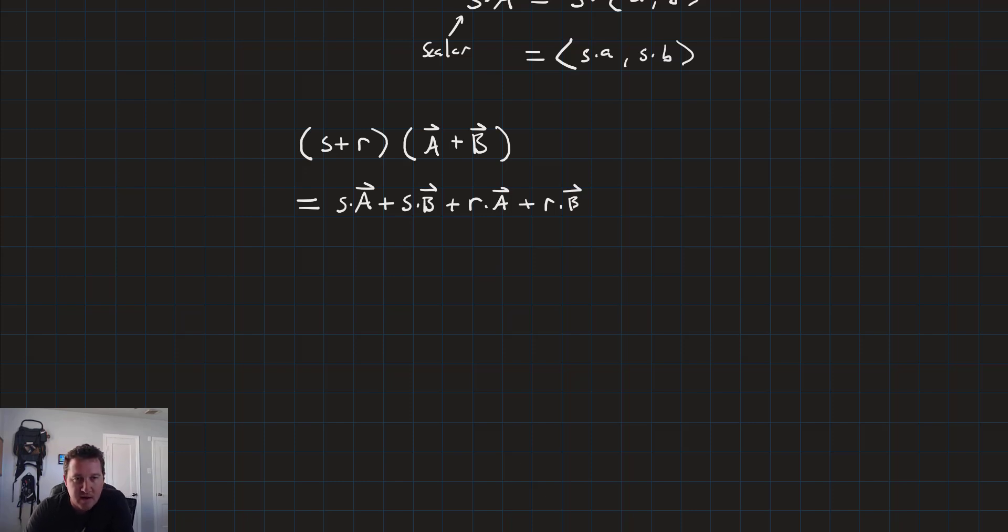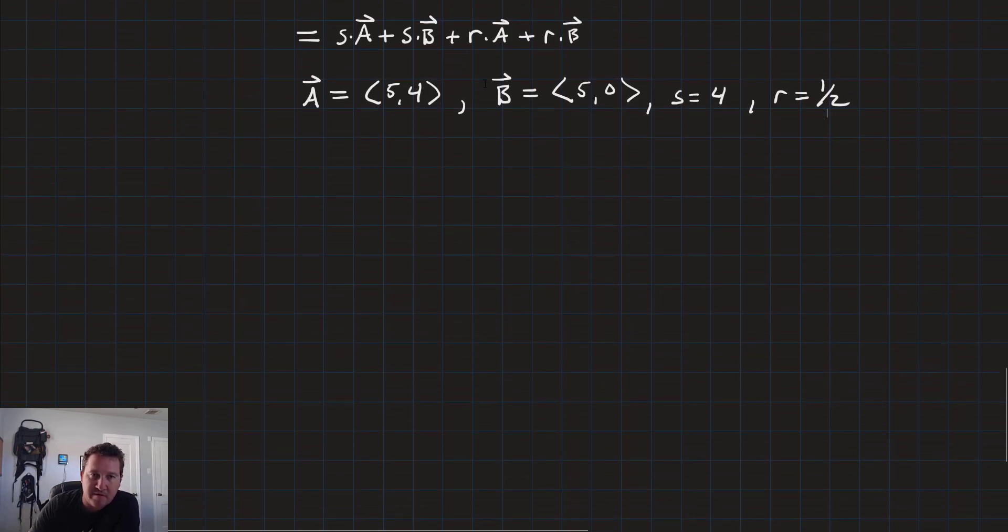So let's go ahead and put numbers to that. Let's keep using the same vectors for a and b. We'll have a is 5 and 4, and vector b is 5 and 0. And let's say that s is equal to 4 and r is equal to 1 half. So there's a bunch of different ways we could resolve this, but we'll go ahead and do it the long way just to see it all worked out and see that both of those principles put in action.